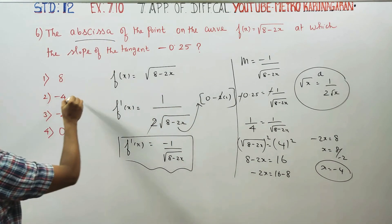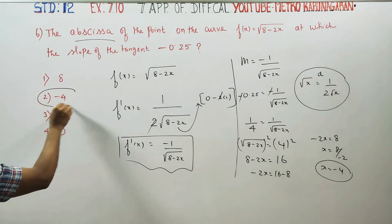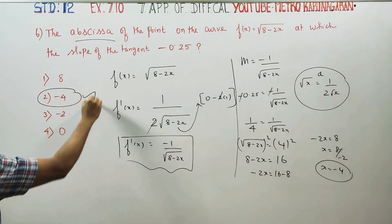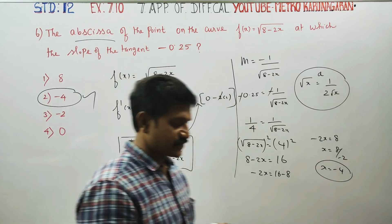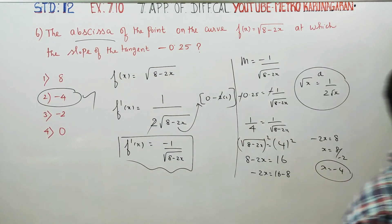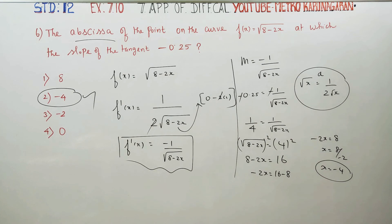So x equals minus 4 is your value for x. The abscissa is equal to minus 4. This is the correct answer: x equals minus 4. That is the slope. Thank you.